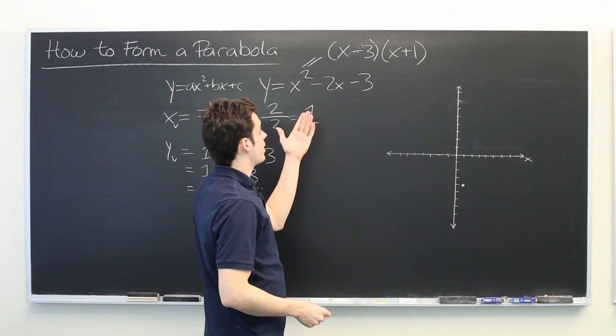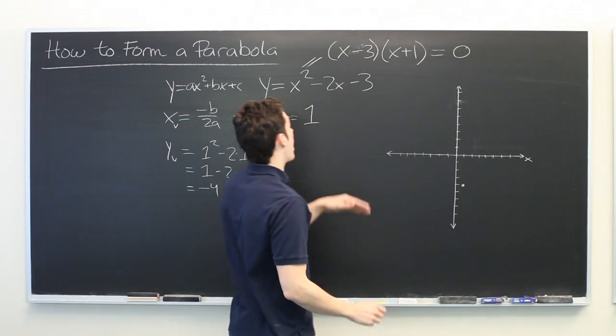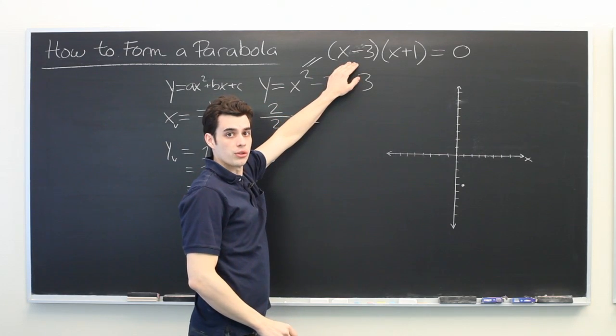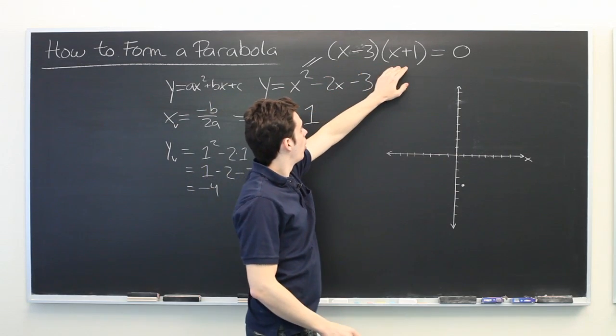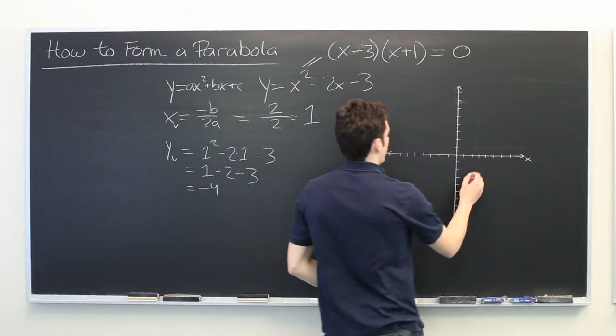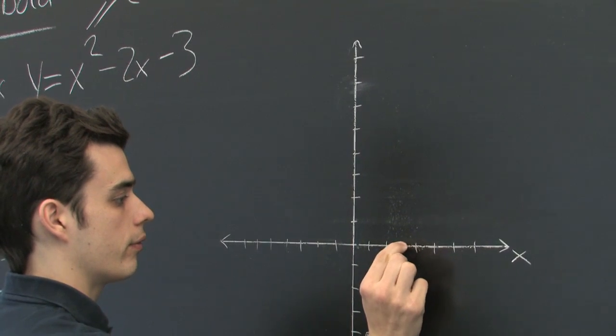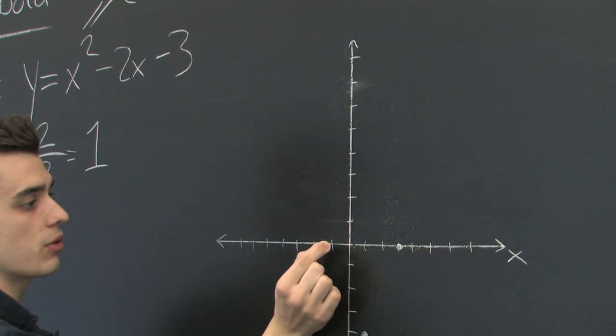So what does this tell us? Well, this is going to equal 0 when either x minus 3 equals 0 or x plus 1 equals 0. And that happens at x equals positive 3 or x equals negative 1.